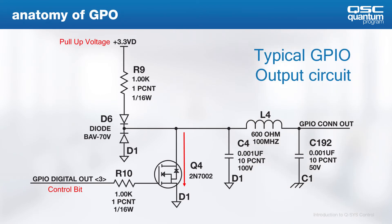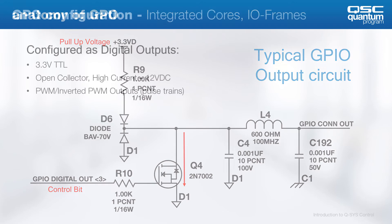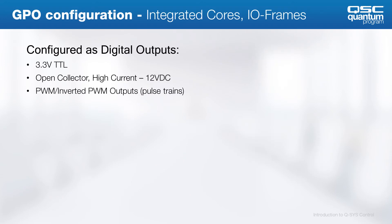Now let's look at the output side of GPIO. The anatomy of this circuit contains a transistor and some protection circuitry. If we toggle the control bit entering the circuit to be low, the transistor provides a sink to ground, which will provide a logic low on the output. If the control bit is driven high, the pull-up voltage will be present on the output, allowing the voltmeter on the connected external device to measure a logic high voltage. GPIO output configurations available include digital outputs of 3.3 volt TTL, open collector high current up to 12 volts DC, and pulse width modulated or PWM pulse train outputs.